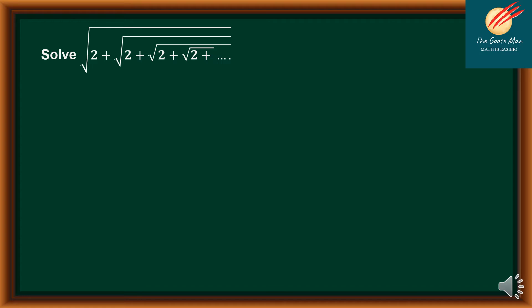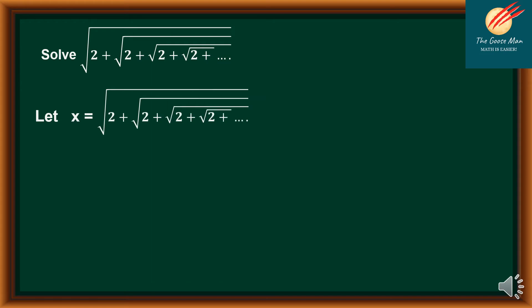So if we want to use this one, it's quite complicated. However, we can use a representation for this. In order to solve this, we will let the expression equal x. So we have x is equal to the square root of 2 plus the square root of 2 plus the square root of 2 plus the square root of 2, and so on and so forth.